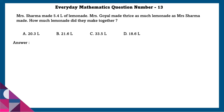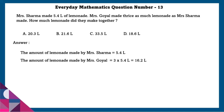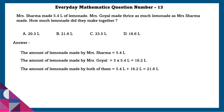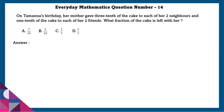Question 13: Mrs. Sharma made 5.4 liters of lemonade. Mrs. Goel made thrice as much lemonade as Mrs. Sharma. How much lemonade did they make altogether? Mrs. Sharma made 5.4 liters. Mrs. Goel made 3 × 5.4 = 16.2 liters. The total amount of lemonade made by both is 21.6 liters.